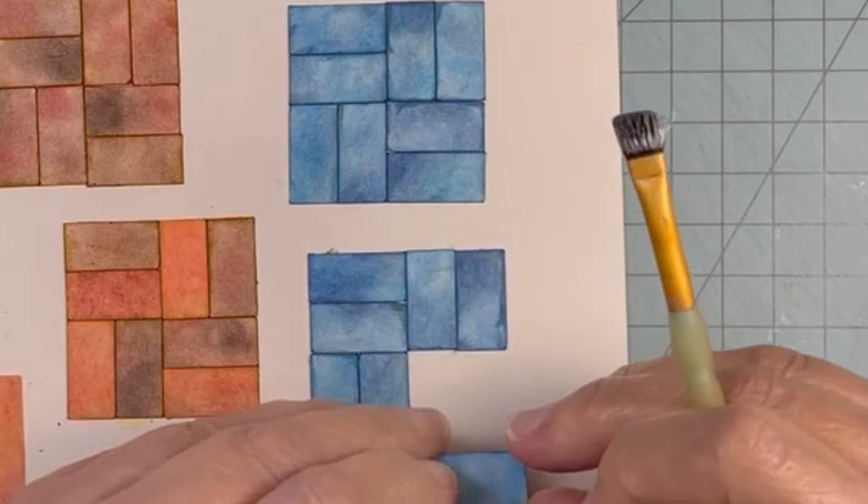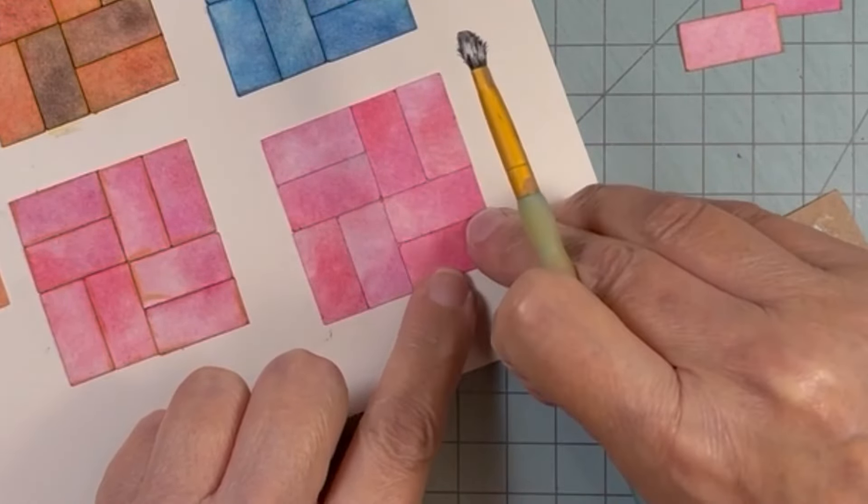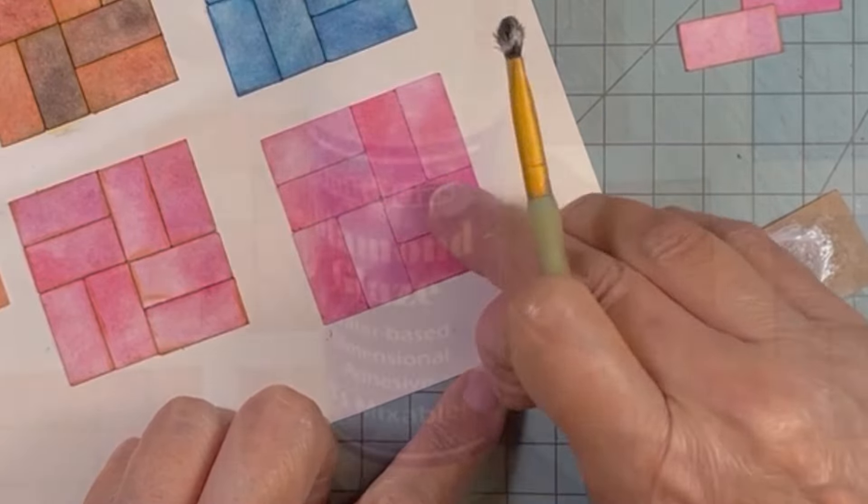And now I'm gluing down two sections of pink. And one of them I did ink the edges, and this one I'm gluing right now I did not ink the edges.